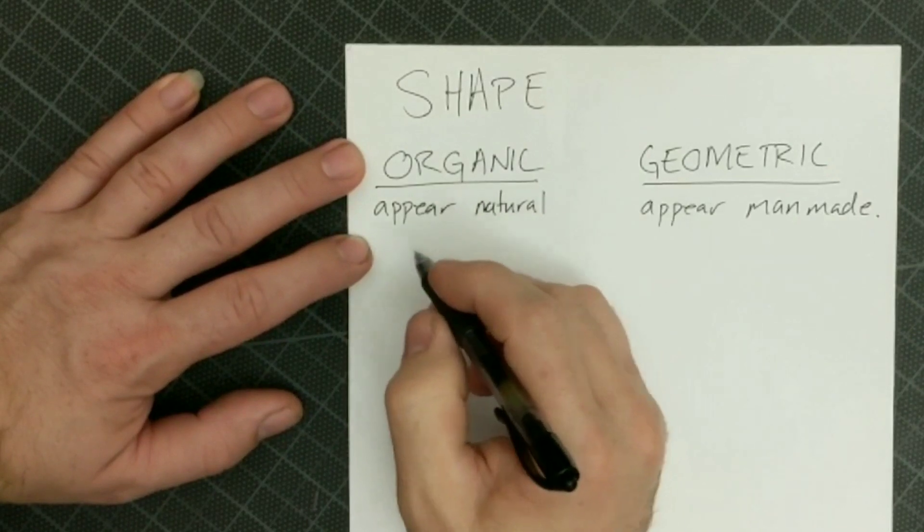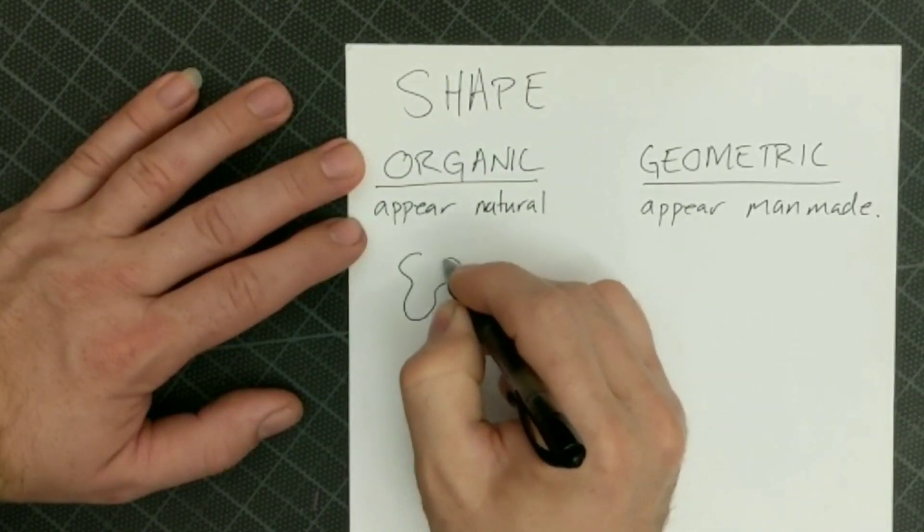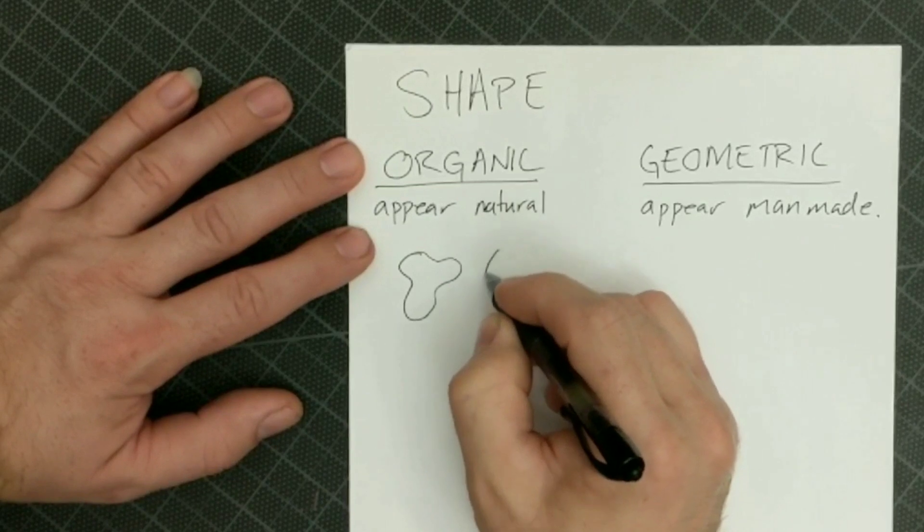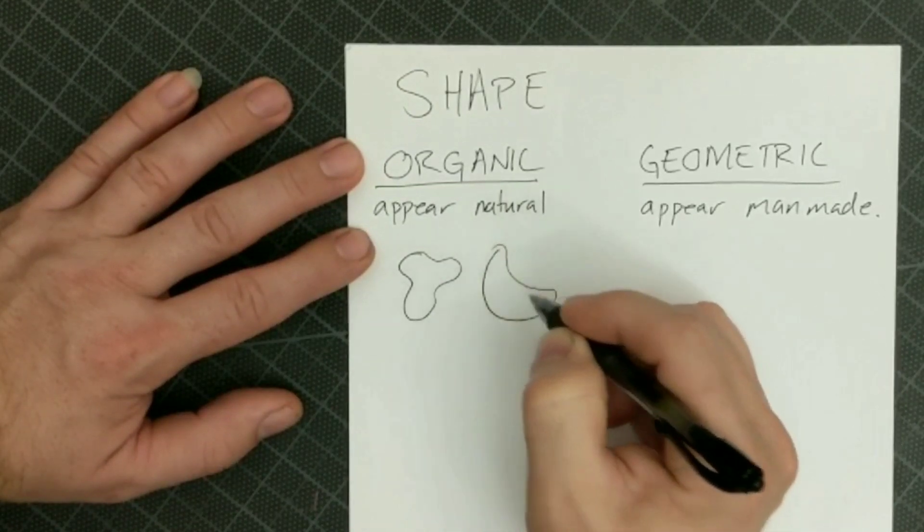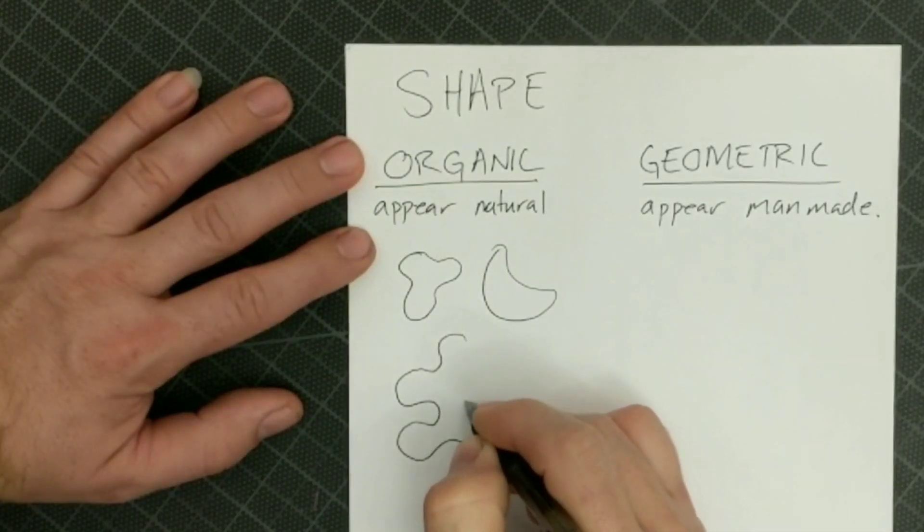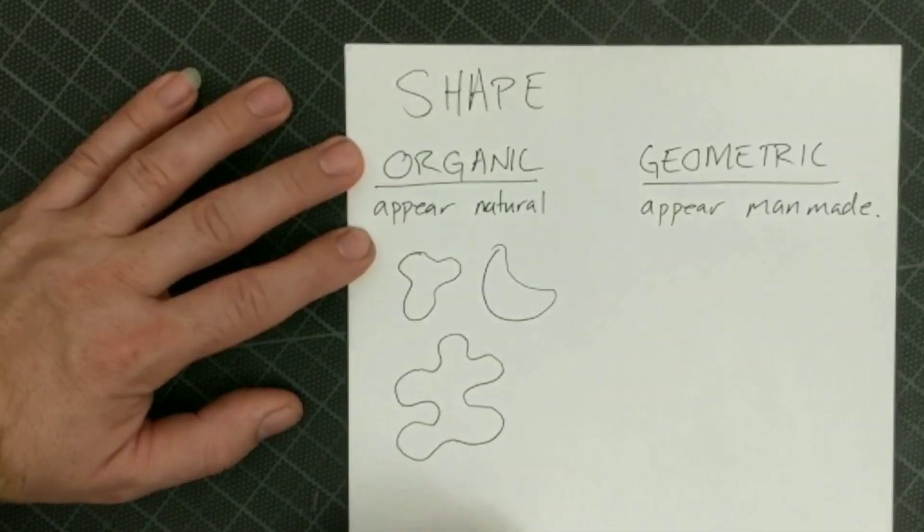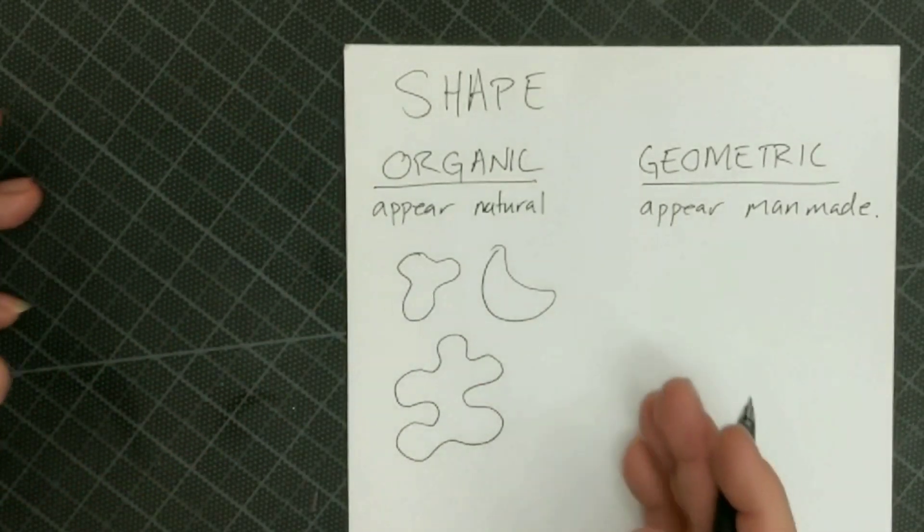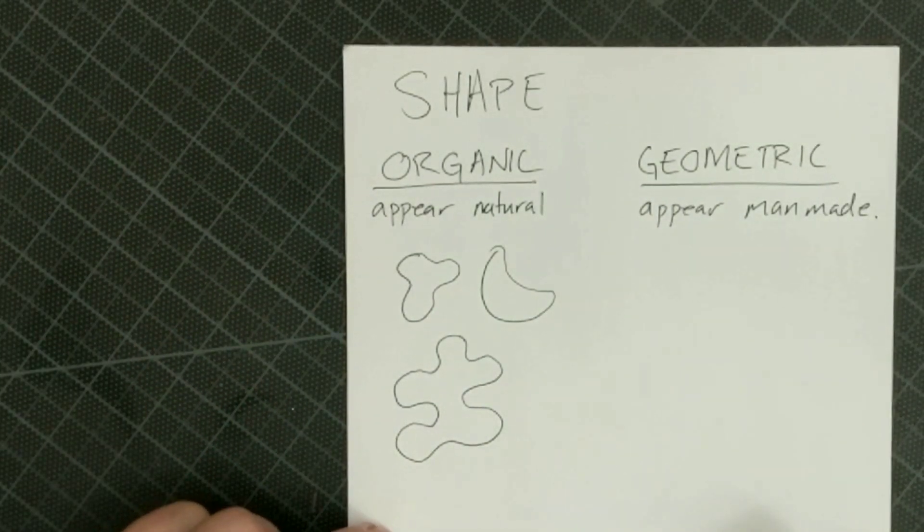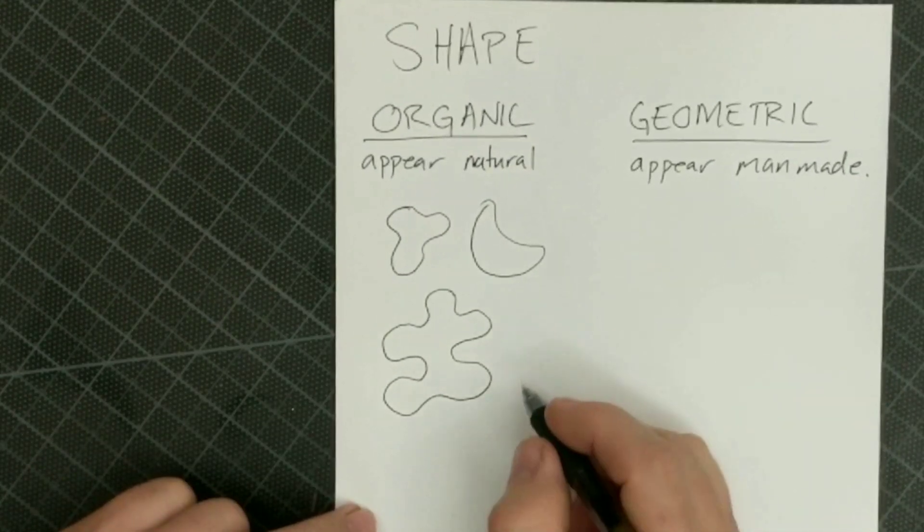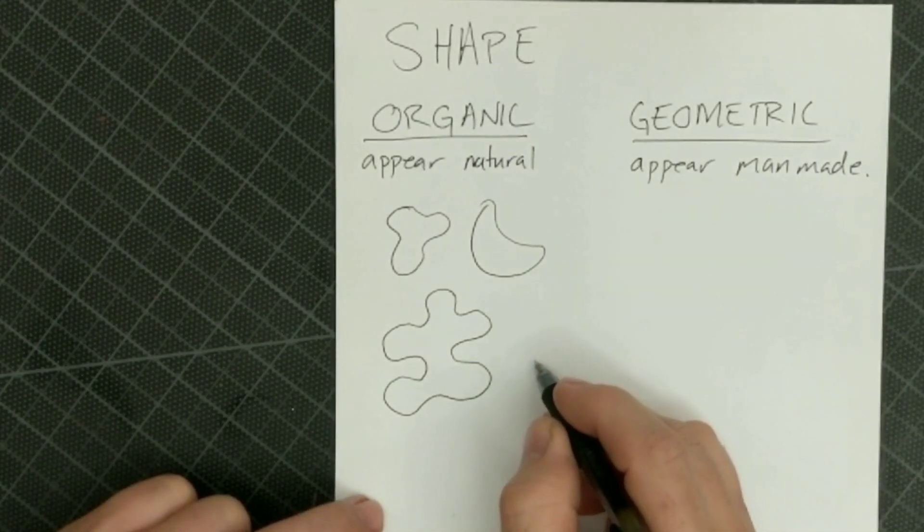Shapes that appear natural, shapes like just blobs, your heart or your liver, those are natural looking shapes. It doesn't look like I use a ruler. It doesn't look like I put a lot of thought behind it or anything like that. They're just kind of naturally occurring shapes.